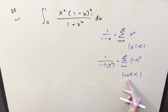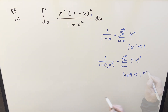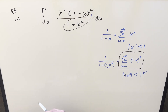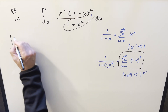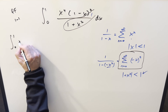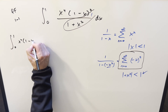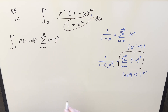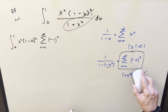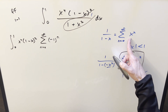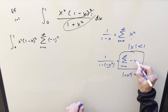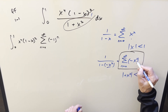Inside the absolute value the minus sign doesn't matter. With our bounds between zero and one this is fine — values between zero and one when squared are still between zero and one. Now I realize my formula was wrong — sorry about that. If you plug (minus x squared) in, this should be (minus x squared) to the n.